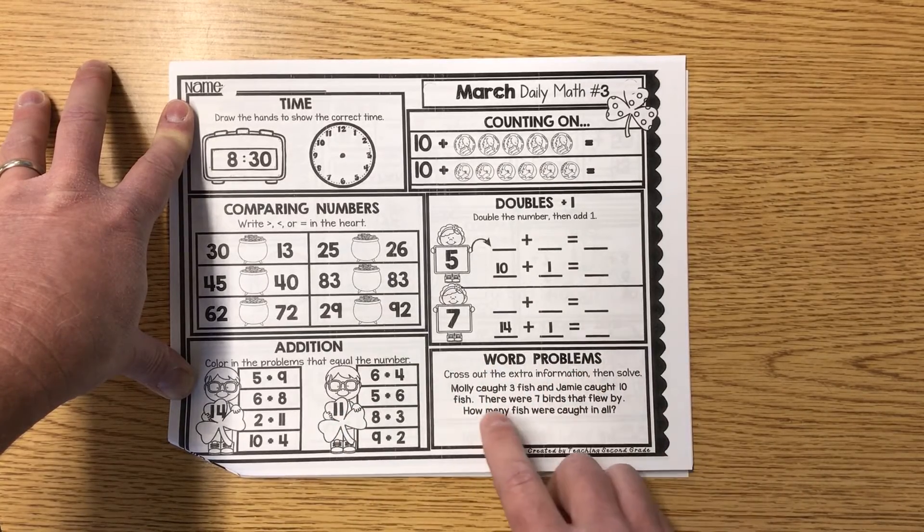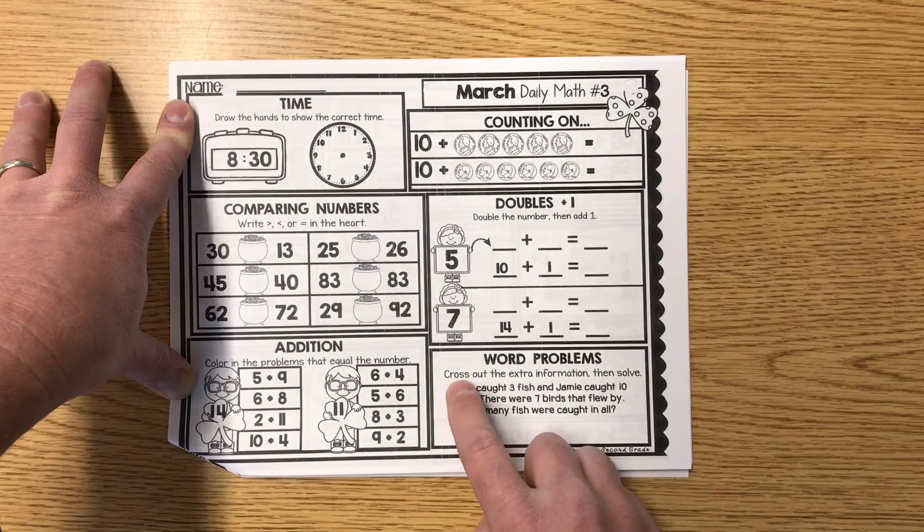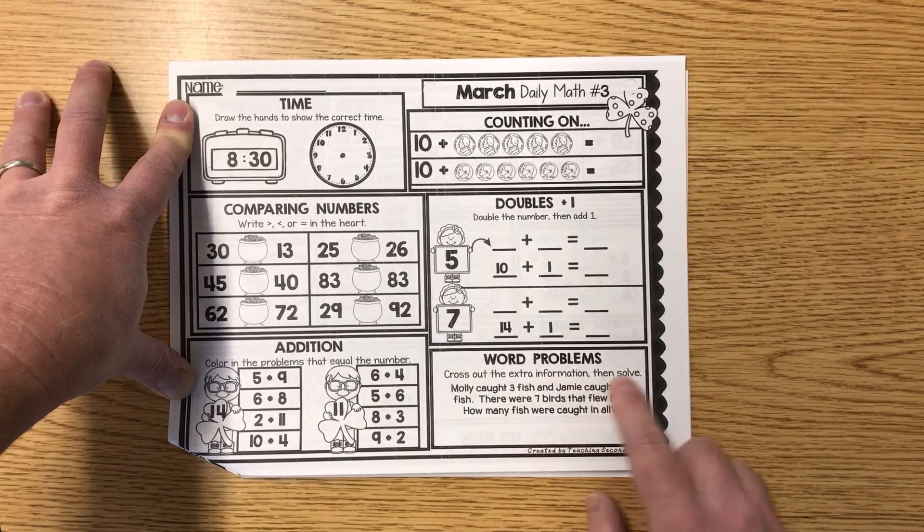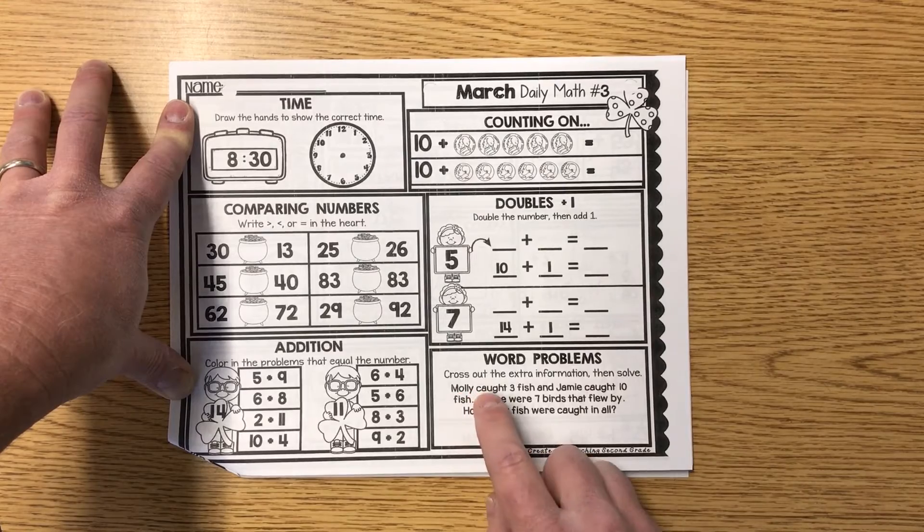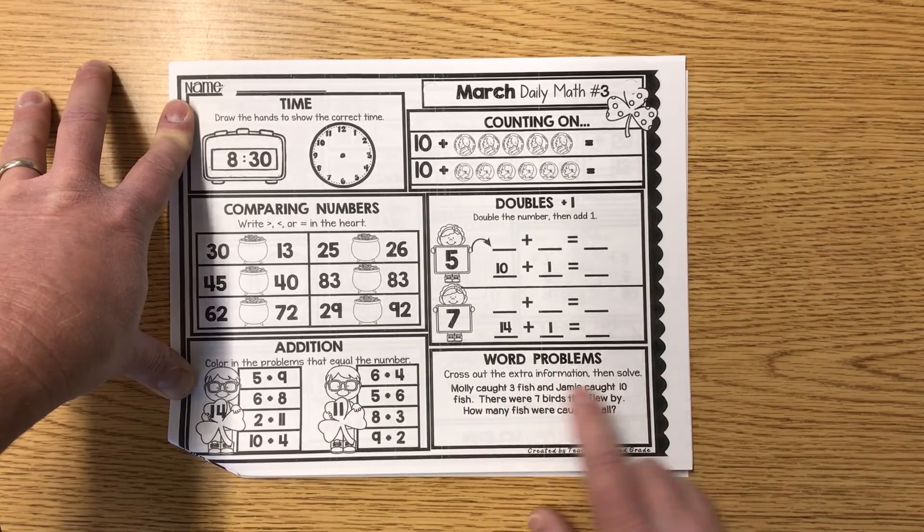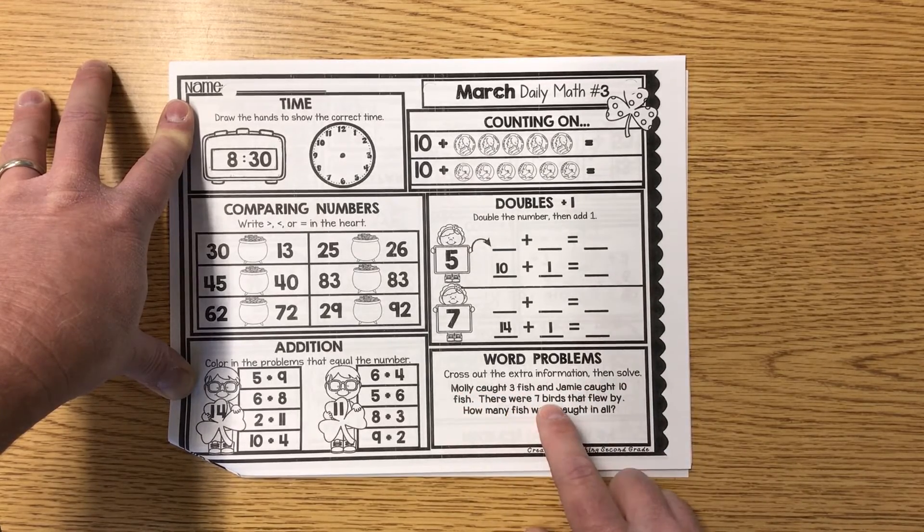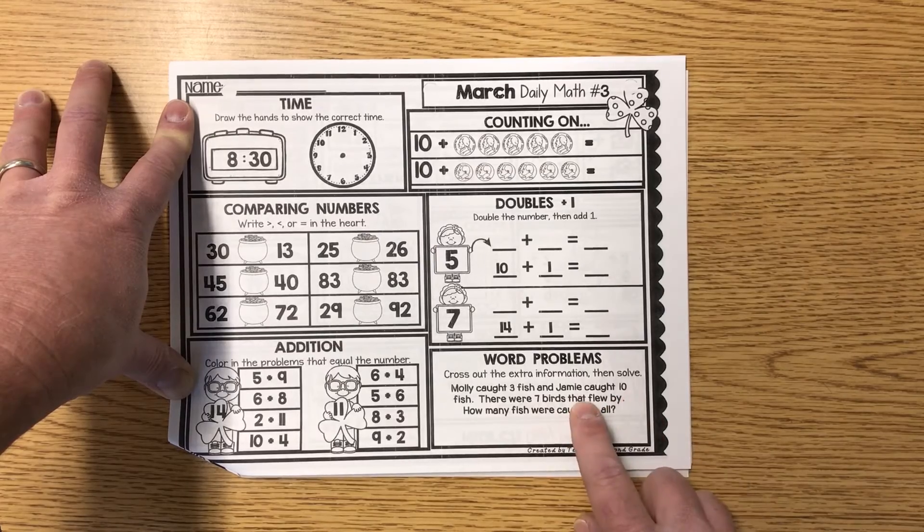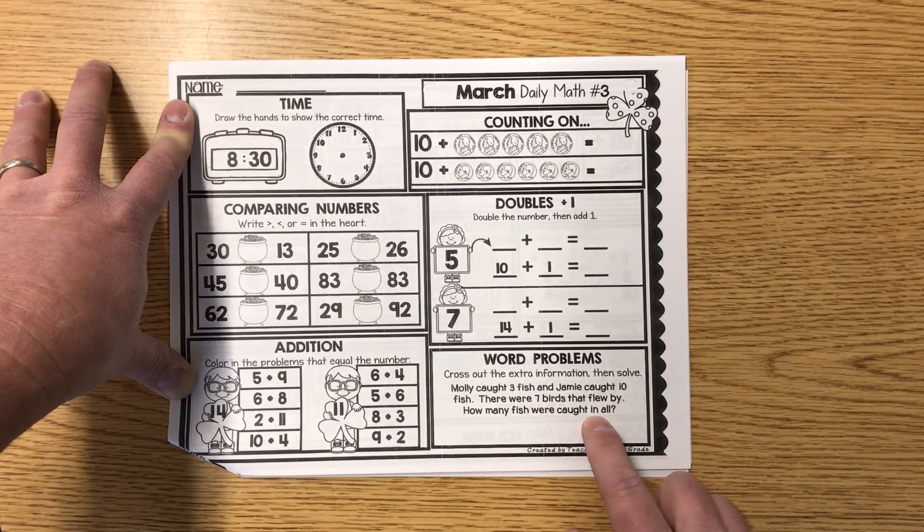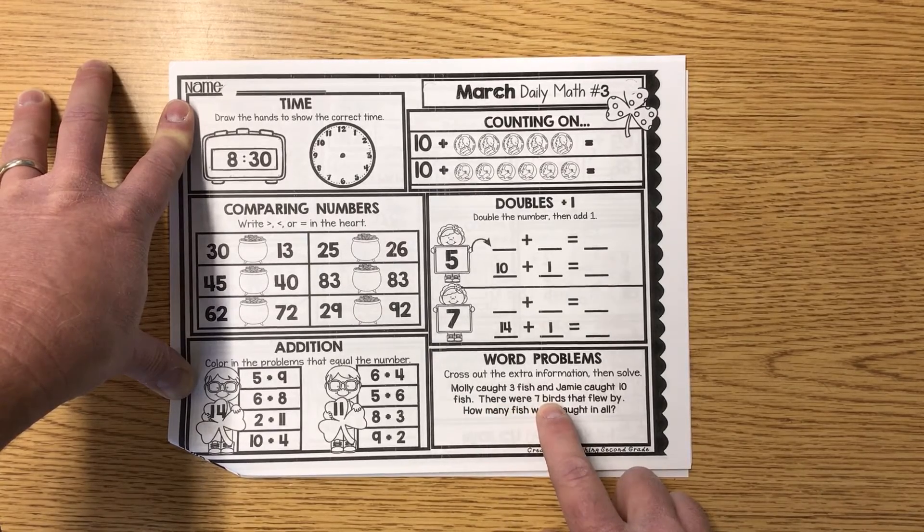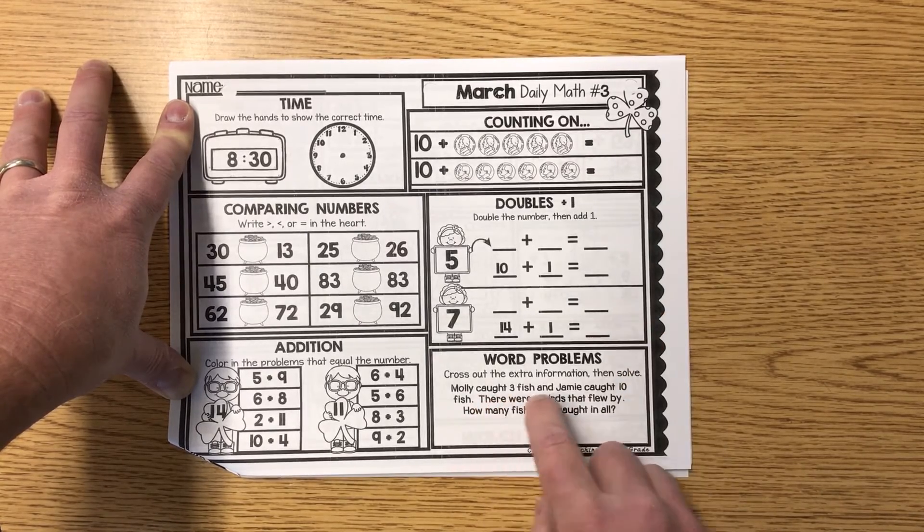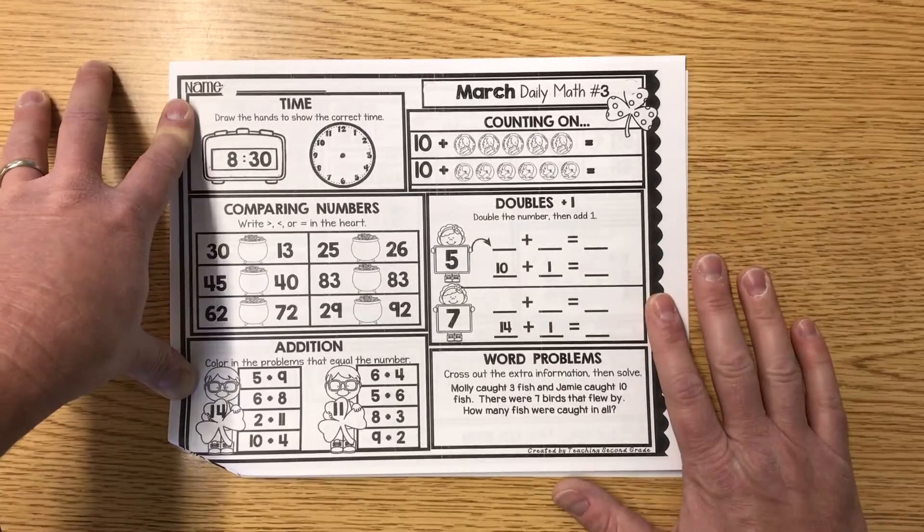Word problems. How many fish were caught in all? Cross out the extra information, then solve. So they're going to give you some information that has nothing to do with it. Molly caught three fish and Jamie caught ten fish. There were seven birds that flew by. How many fish were caught in all? Wait one second. There were seven birds. Does it have anything to do with fish? Ah. Cross that part out. That's a little hint to you guys.